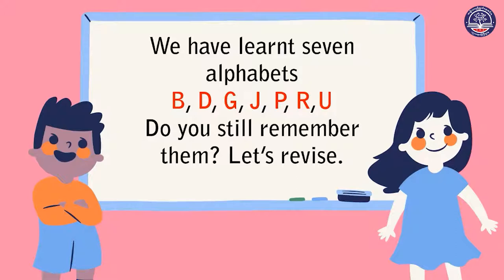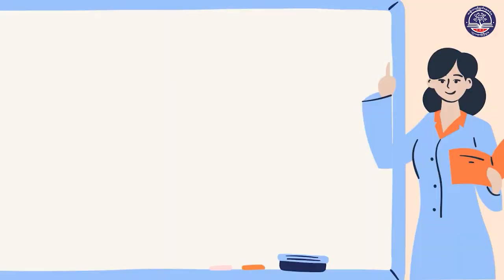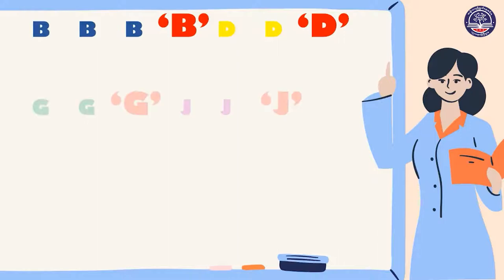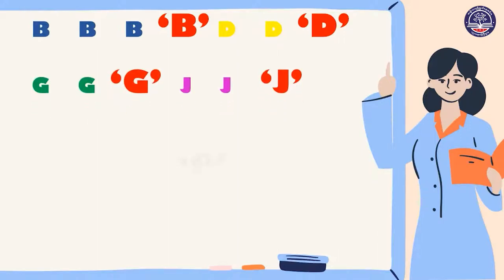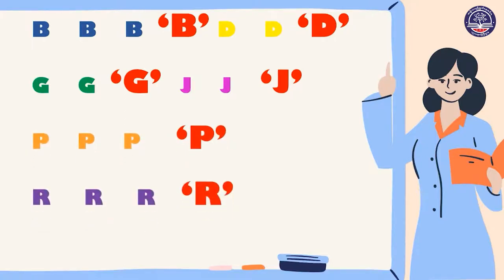Let's revise now, together. We have learned seven alphabets: B, D, G, J, P, R, U. Do you still remember them? Let's revise. Now you have to listen carefully and we will sing together again next time.